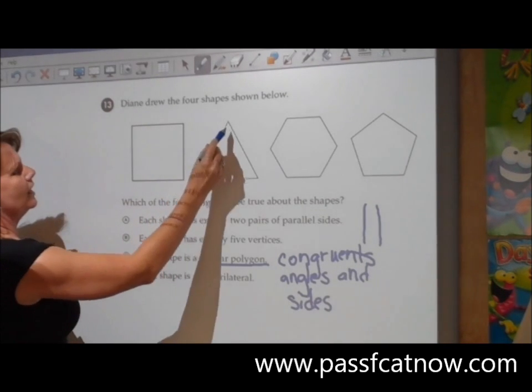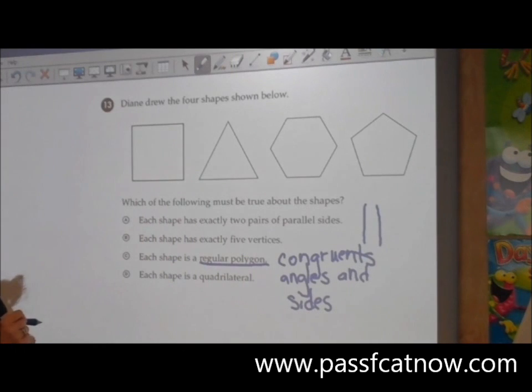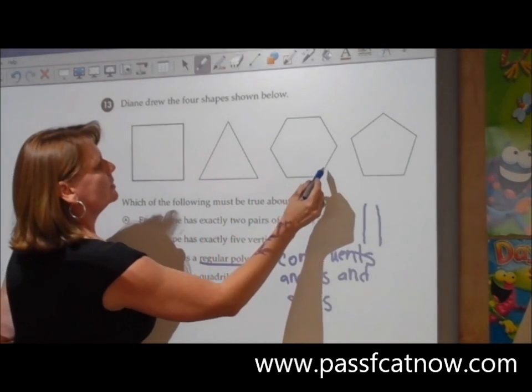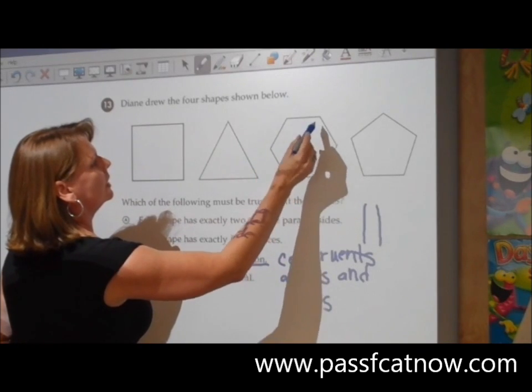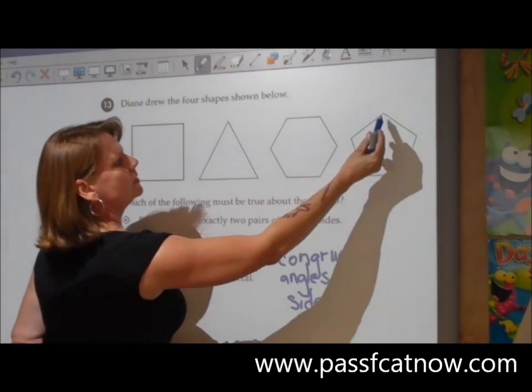This is an equilateral triangle. The angles are all the same. The sides are the same length. The hexagon, same thing. The sides are all the same length. The angles are all the same. And the pentagon, same thing.